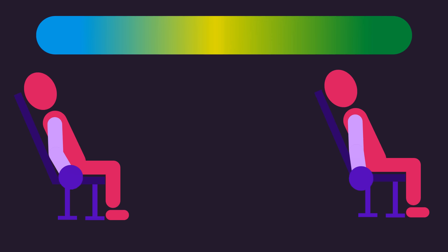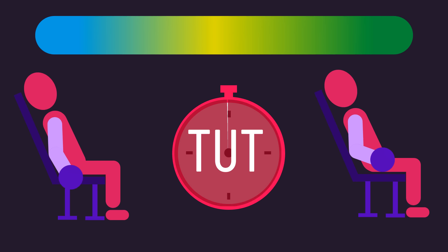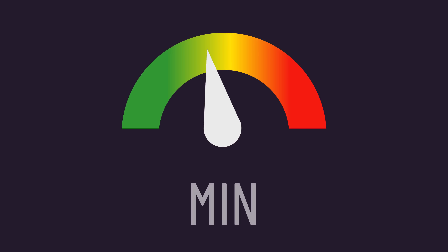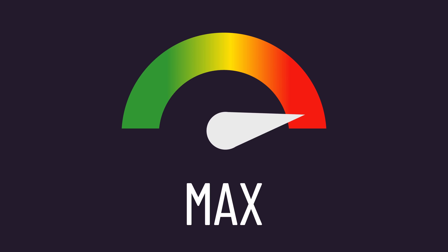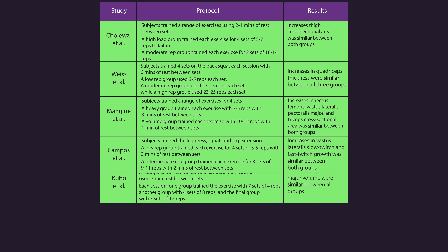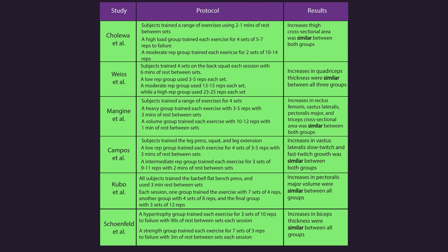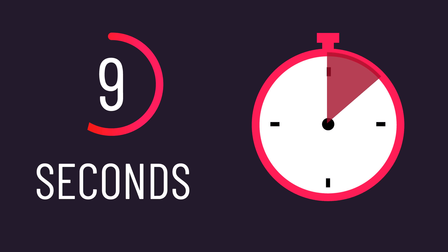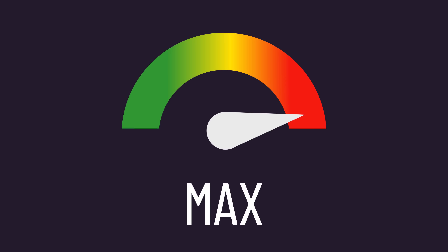It's clear that a wide range of time under tension values are comparable for evoking muscle hypertrophy, but there likely exist minimum and maximum thresholds. We have some evidence indicating time under tension values as low as 9 seconds can still be substantially effective for hypertrophy, provided overall training volume is sufficient. But what about maximum thresholds?